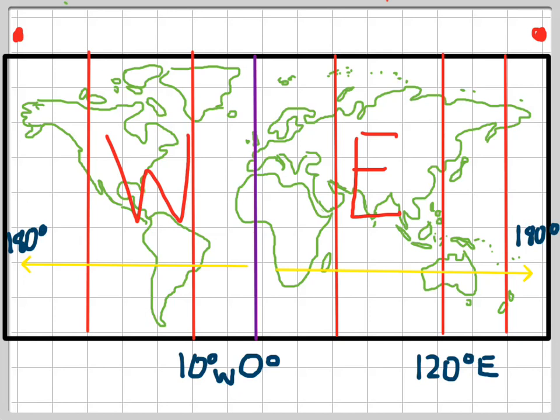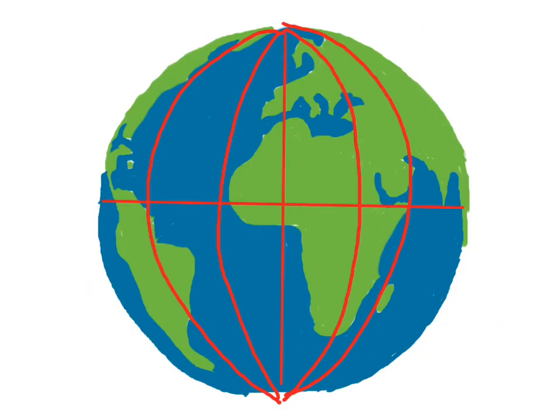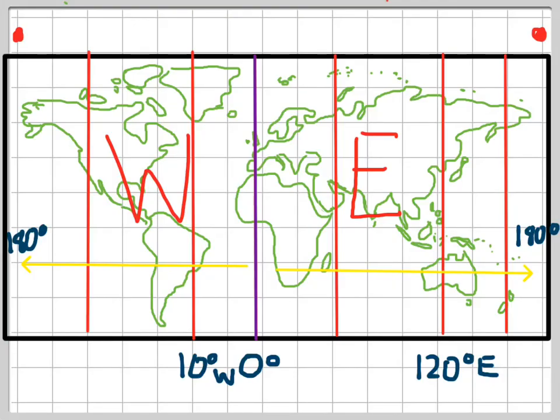So as a quick revision, the lines of longitude run from the north pole to the south pole, which we can see here. They're not parallel to each other, and they're all the same length. There is a prime meridian that runs through Greenwich in England, which is the purple line there at zero degrees. And the other lines of longitude either lie to the east or to the west of the prime meridian until they meet at 180 degrees.